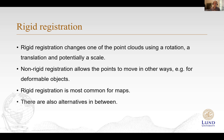A rigid registration changes one point cloud using a rotation, translation, and potentially a scale. Sometimes scale is known — for example, if you use IMU data — but sometimes it has to be estimated. You can also do non-rigid registration, which allows points to move in different ways, necessary for deformable objects. Rigid registration is most common for maps and is what I'll focus on, though we'll also see alternatives in between.